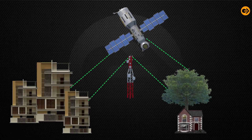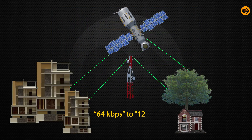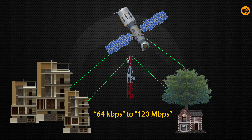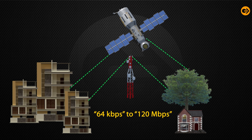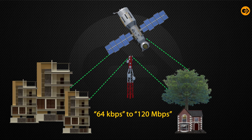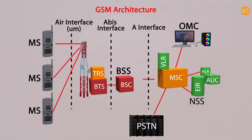The digital system can carry 64 Kbps to 120 Mbps of data rates. There are several cell sizes in GSM such as Micro, Macro, Pico, and Umbrella cells. Each cell diversifies as per the implementation of the domain.